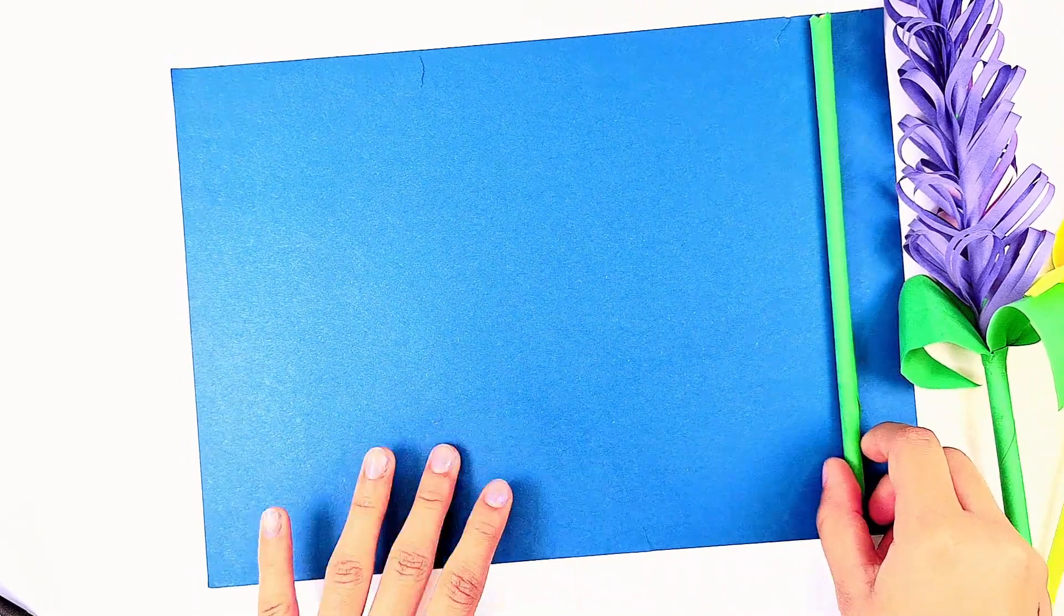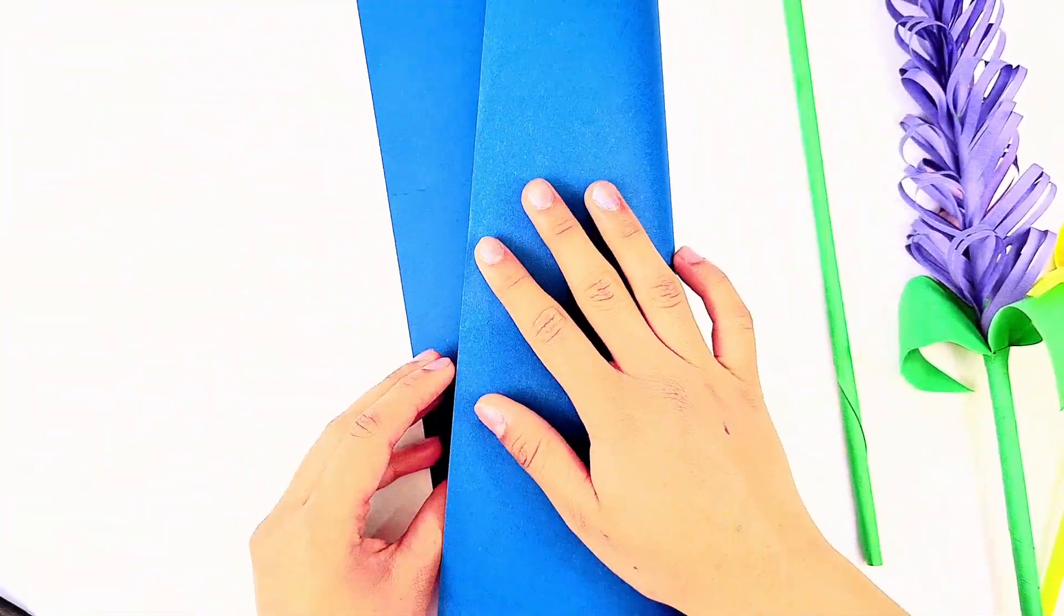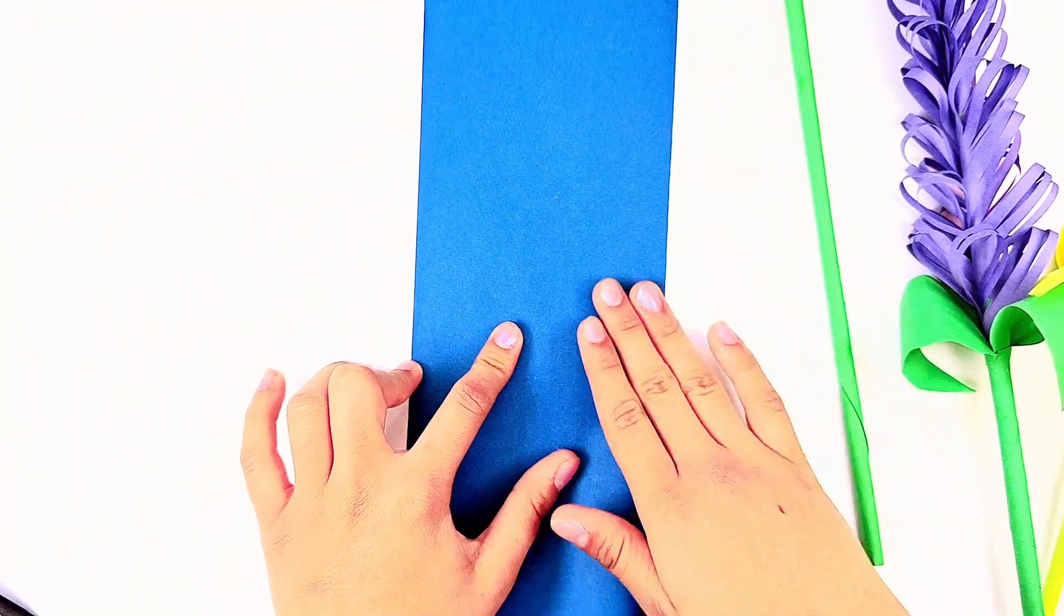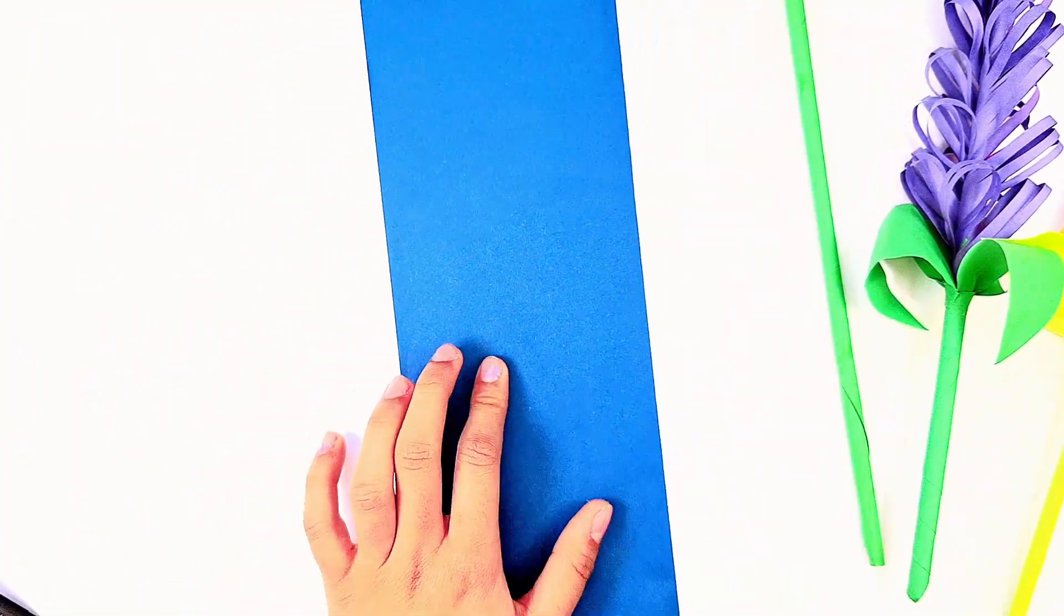Now that we've made the stem, let's make the flower. Take a color of your choice—I'm going to use blue. Fold it in half and then cut along the crease.